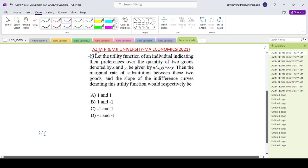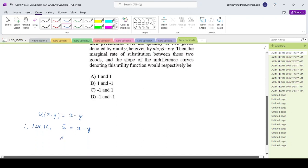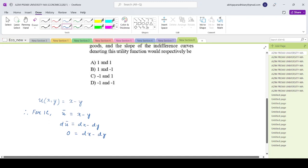So the utility function u(x,y) equals x minus y, right? Therefore, for an indifference curve, utility is fixed. So if you differentiate this, du bar equals dx minus dy. Du bar is 0, so that is dx minus dy. So that implies dy/dx equals 1, correct?